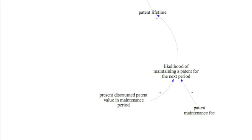But what is it that determines how long patents last? The owner has to pay a regular maintenance fee in order to keep the patent. Once we know how likely it is that the owner pays the maintenance fee in any given period after registration, we will know when he decides to stop paying and thus when the patent expires. The higher the likelihood of maintaining a patent for the next period, the higher the patent lifetime. This relationship is again represented by the blue arrow that points from the first to the second variable and the positive sign it has.